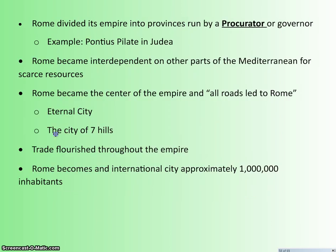Rome divides its empire into provinces run by a man called the procurator or governor — an example being Pontius Pilate in the territory of Judea, the figure in the Bible said to have put Jesus to death. Rome becomes interdependent on other parts of the Mediterranean for scarce resources: grain from Africa, precious metals from the Middle East, fish from the Greeks and the islands. Spain and France serve as something of a breadbasket, growing crops sent to Rome. Rome becomes the center of the empire — hence 'all roads lead to Rome.' Rome is also called the eternal city or the city of the seven hills.